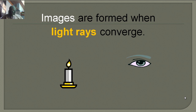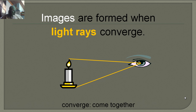Images are formed when light rays converge. Converge means they come together, and we can see that these light rays are converging inside of our eye — that's how images are formed.